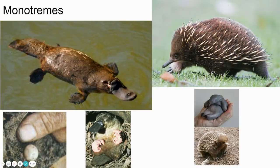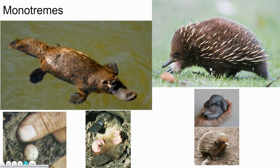There are a couple of egg-laying mammals. The platypus is actually a mammal but it lays eggs — it's very unique. The echidna, or spiny anteater, is another egg-laying mammal. They both hatch out of eggs as very immature young that have to be cared for before they're able to survive on their own.